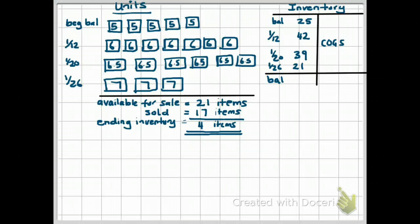Let's go back to our example here. We're going to use last in first out. Therefore, the most recent items purchased are the first to go. We sold 17 items. So we assume that the first three to go out are the purchases on the 26th of January, the $7 items. The next items to go are the ones that we purchased on the 20th. So those six are the next to go.